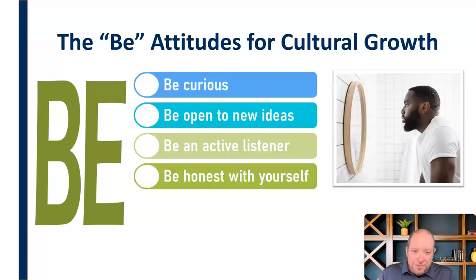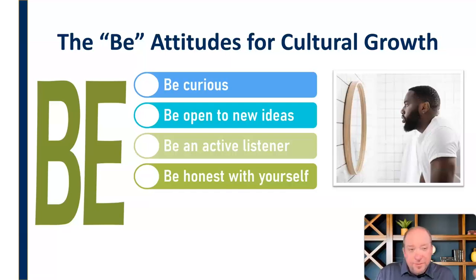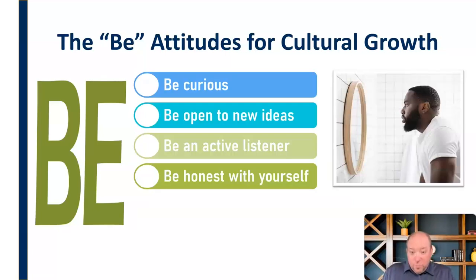We have to be honest with ourselves and know who we are — honest about ourselves in both positive and negative ways. Knowing areas where we have room to improve, but also the things we do well. Understanding who we are is going to help us understand who other people are and appreciate who other people are, even if they're very different from us. We have to be honest with and about yourself — that's an important attitude.